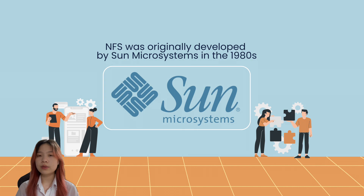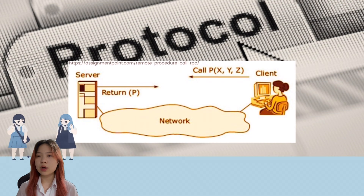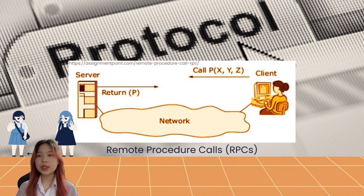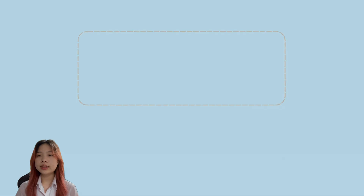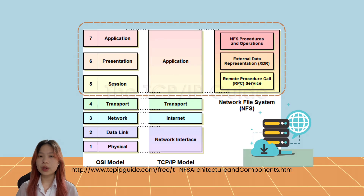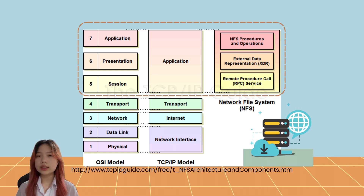NFS was originally developed by Sun Microsystems in the 1980s and has been implemented on a wide range of operating systems. It uses remote procedure calls to route requests between clients and servers and is an application layer protocol, meaning that it can operate over any transport or network protocol stack. NFS is often implemented on systems running the TCP/IP protocol suite.